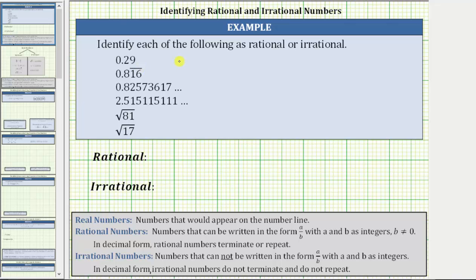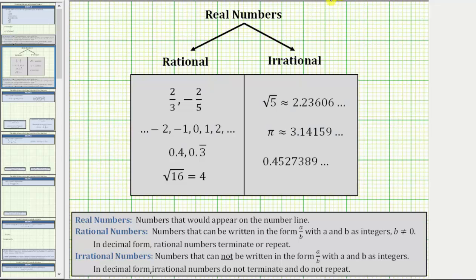We are asked to identify each of the following numbers as rational or irrational. Let's begin by defining real numbers. Real numbers are numbers that would appear on the number line, and all real numbers are rational or irrational.